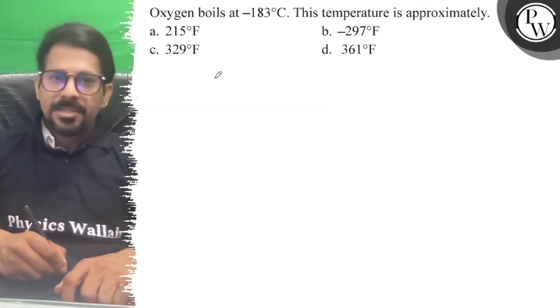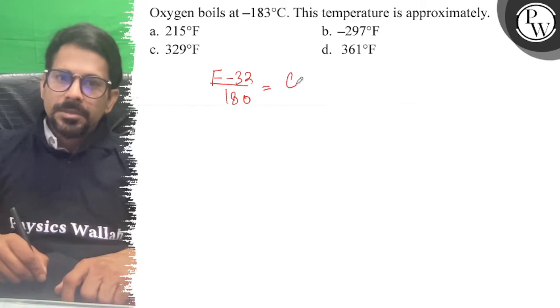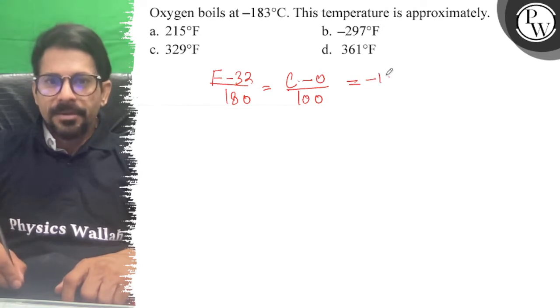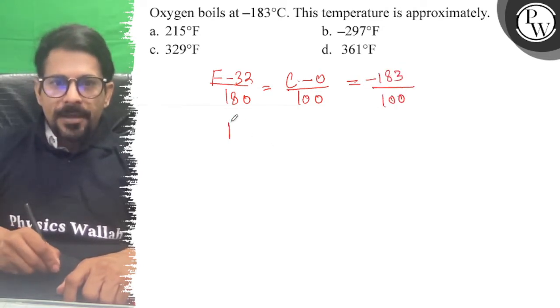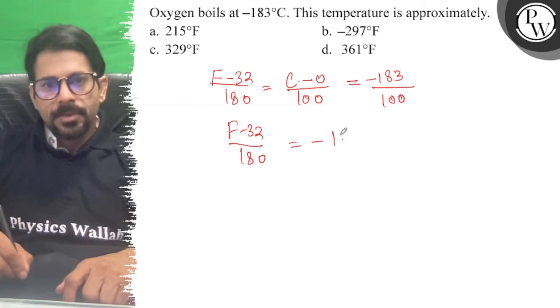So I'm looking at Fahrenheit here. The formula is F minus 32 over 180 equals C minus 0 over 100. Now the C given is minus 183 over 100, so F minus 32 over 180 equals minus 183 over 100.